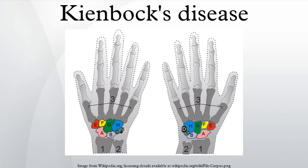Kienböck's disease is a disorder of the wrist. It is named for Dr. Robert Kienböck, a radiologist in Vienna, Austria, who described osteomalacea of the lunate in 1910. It is breakdown of the lunate bone, a carpal bone in the wrist that articulates with the radius in the forearm. Specifically, Kienböck's disease is another name for avascular necrosis with fragmentation and collapse of the lunate.